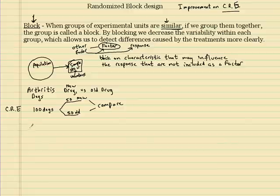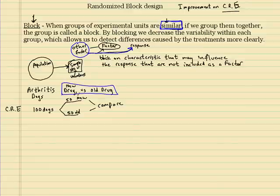Now to improve it, we want to create groups that are similar, that may be another factor that may have something to do with the arthritis that has nothing to do with the drugs, because the drugs are already in the treatment groups. So what I might do, and this is what we call it, we say we block on breed.